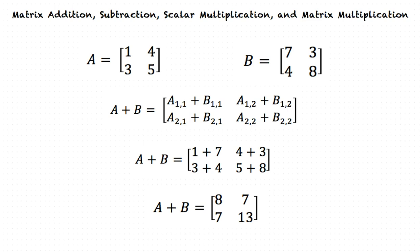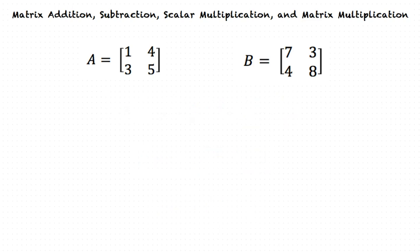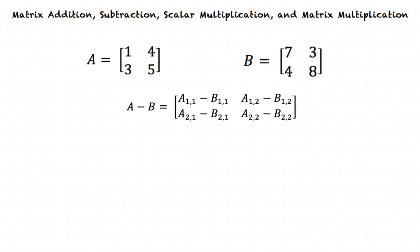Now we can look at Matrix Subtraction. How would we go about doing this? We do this by using the same concept as Matrix Addition, except we will subtract instead of add. We will continue to use Matrix A and Matrix B. Subtracting Matrix B from Matrix A looks like A minus B equal to Row 1: A11 minus B11, A12 minus B12; Row 2: A21 minus B21, and A22 minus B22.